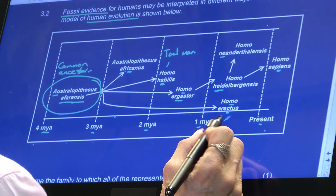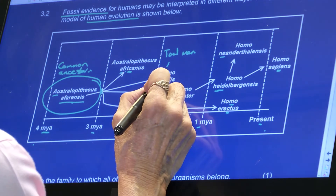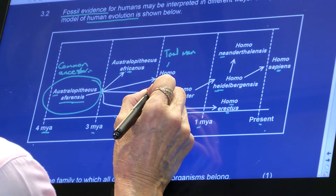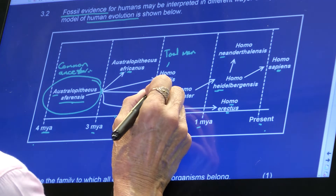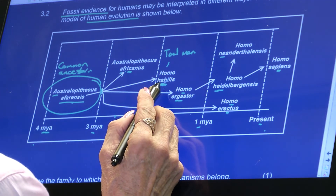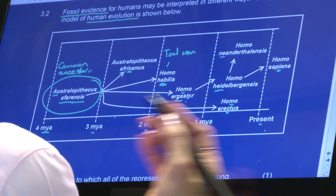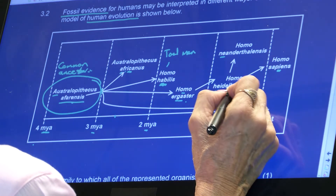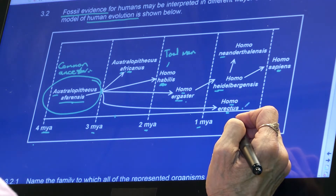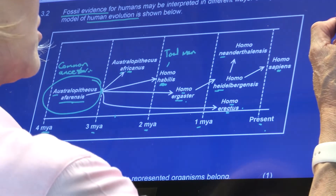They don't expect you to know all these names off by heart, just to recognize them — though some you must know, like habilis. Homo habilis fossils were found only in Africa, and the oldest ones too. Homo ergaster, Heidelbergensis, and Homo erectus were also found here in Africa. So we all come from Africa.